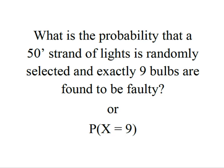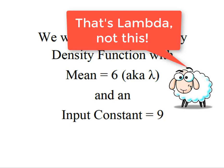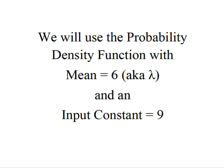This is the same thing as finding the probability that X is equal to 9. So we're going to use the probability density function, the PDF in Minitab, and we're going to use it with a mean equal to 6. This is also known as lambda, and our input constant is going to be 9. Just remember that this mean value of 6 is only going to apply to an interval of 50 feet. If we were looking at 100 feet, our mean would be 12. If we were looking at 25 feet, our mean would be 3.